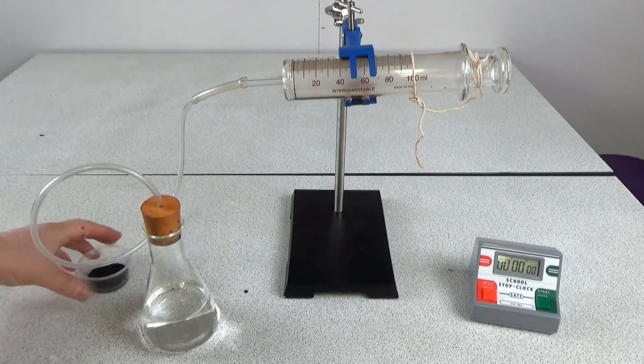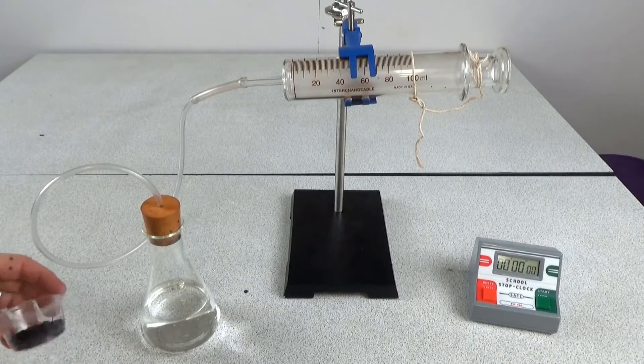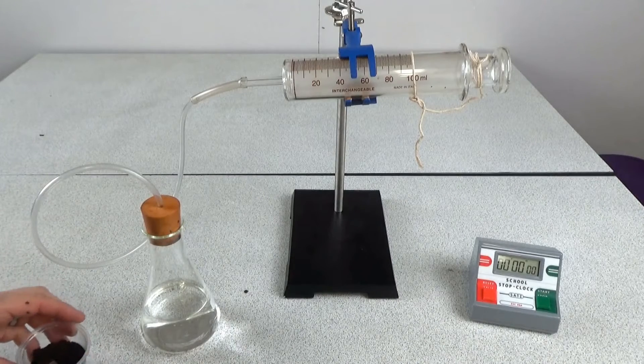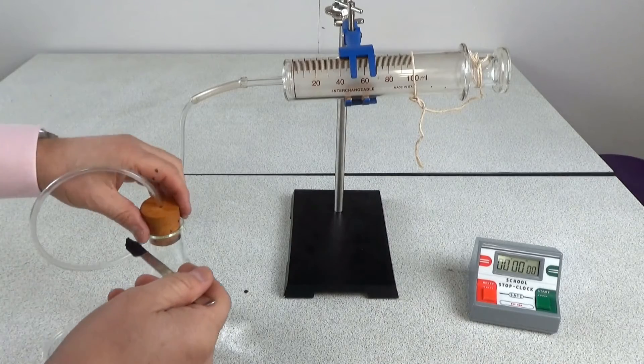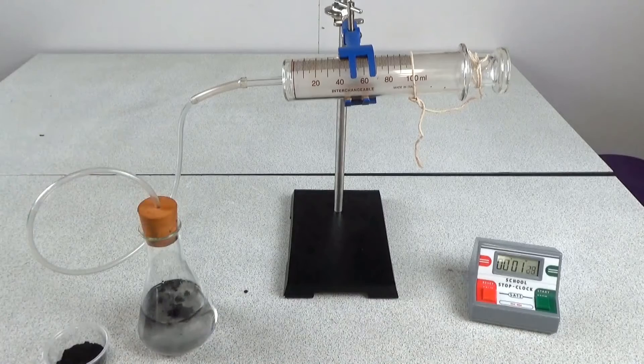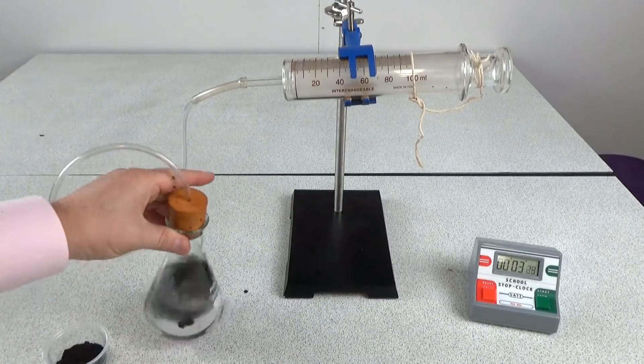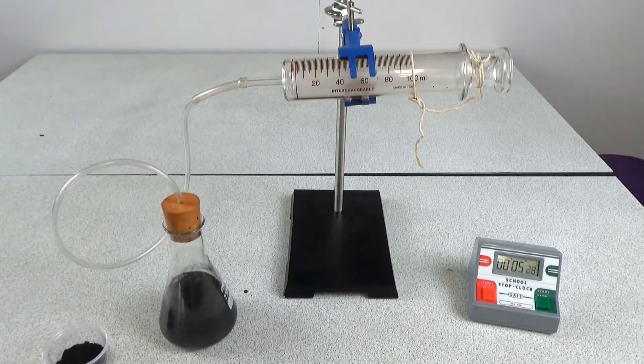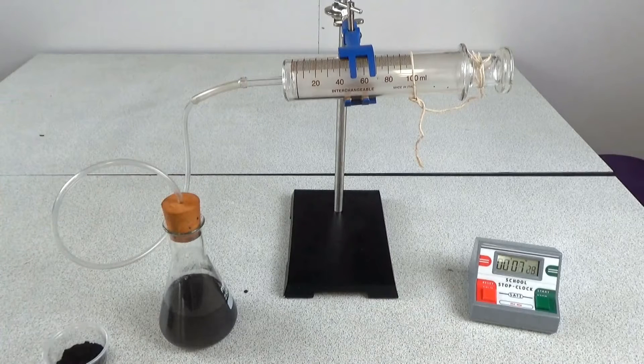So the first substance I'm going to try to speed up the reaction is manganese oxide, so I'm only using a small amount of it. As soon as that goes in I start the stopwatch and then I can record any gas being made using the gas syringe, and I'm going to record that every 10 seconds.